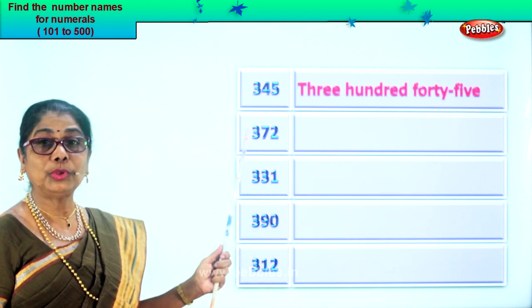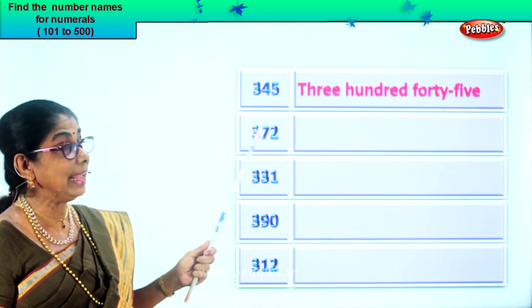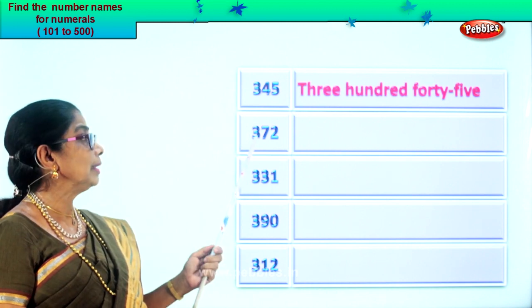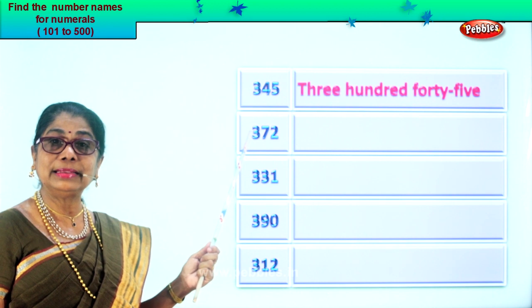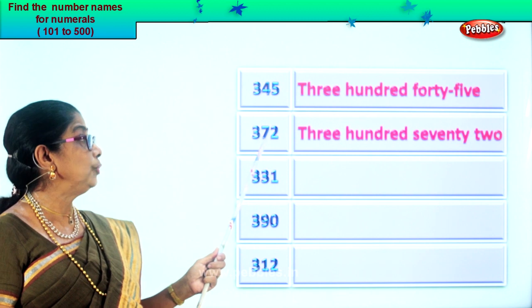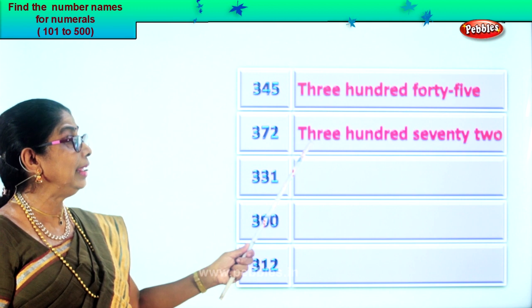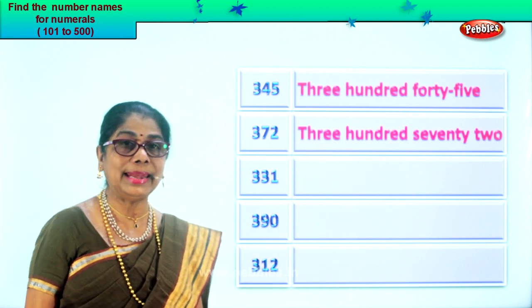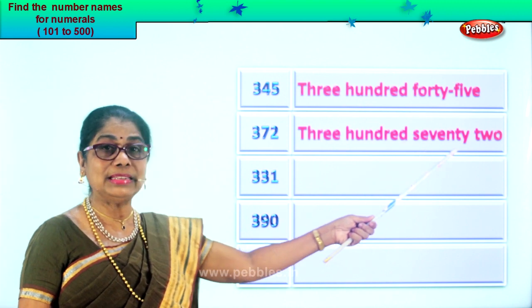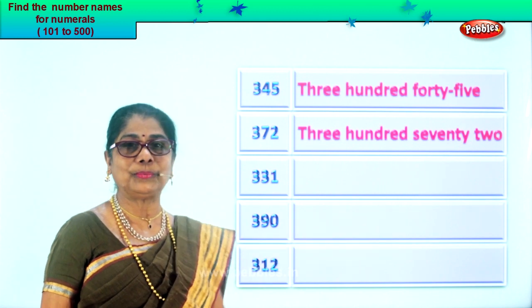Let's look at the next numeral. You have two in the ones place, seven in the tens, and three in the hundreds place. Read this: three hundred seventy-two. So first we write down three hundred, then seventy-two. Three hundred seventy-two.